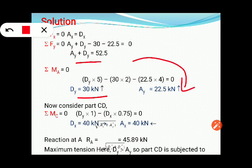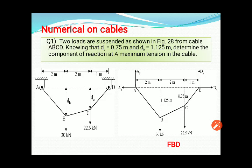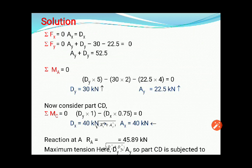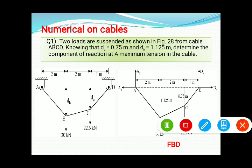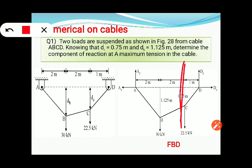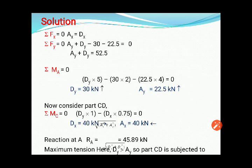Consider portion CD. Take a section at point C and consider the right-hand side. Taking moment about C: D_x is rotating clockwise and D_y is rotating anticlockwise — using these two gives the value of D_x, which equals A_x.